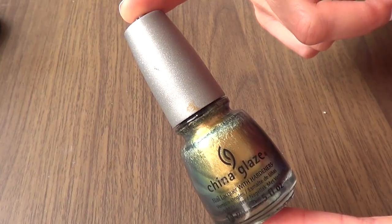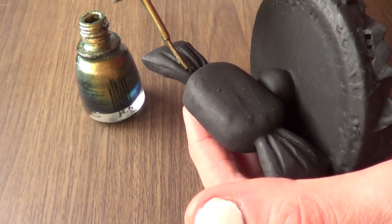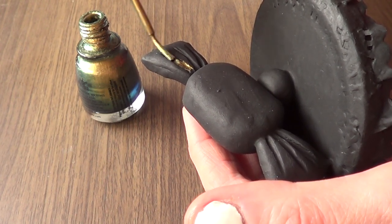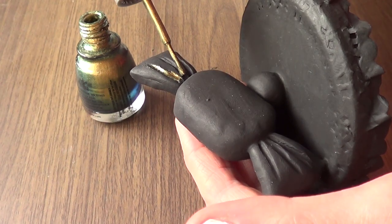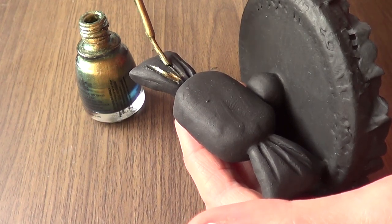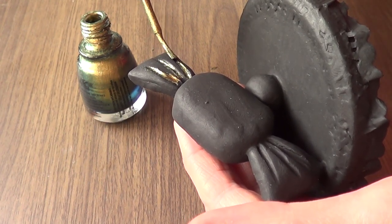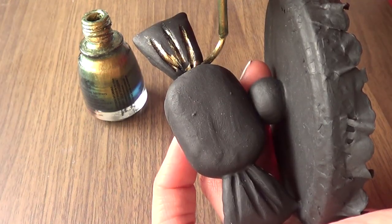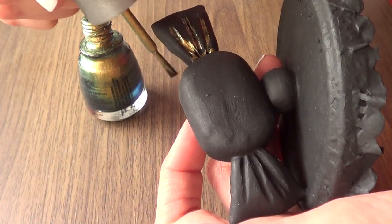So once it's done and dry, I'm going to be taking gold paint. Now, as you can see, I'm using some nail polish because at this point I didn't have any acrylic paint in gold, so I'm just going to be working with my nail polish.